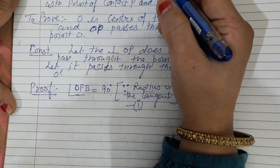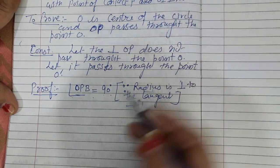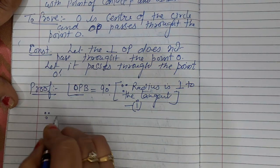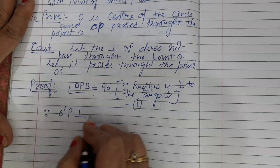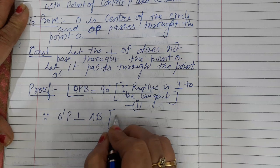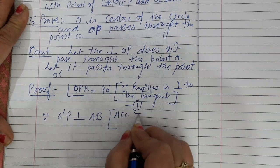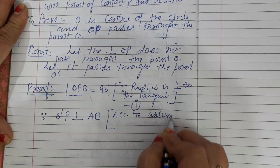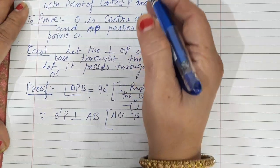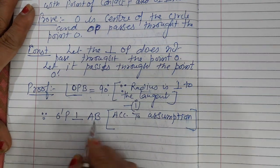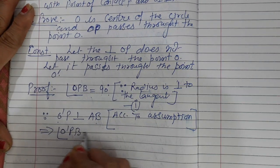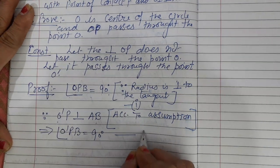Since we assumed that OP does not pass through O but passes through O dash, then OP is perpendicular to tangent AB according to our assumption. So O'P is perpendicular to AB, meaning angle O'PB = 90° ... (equation 2).